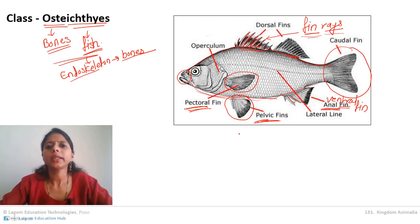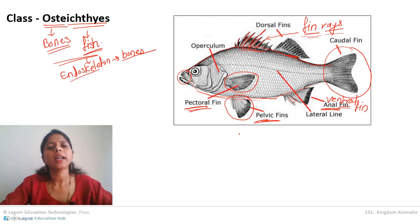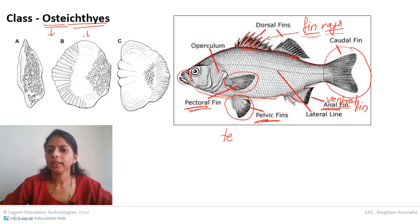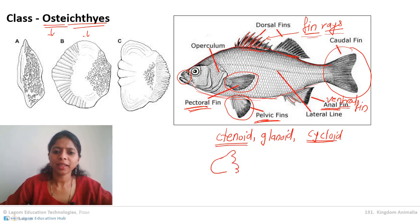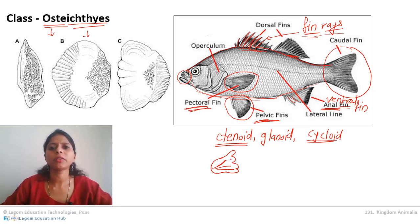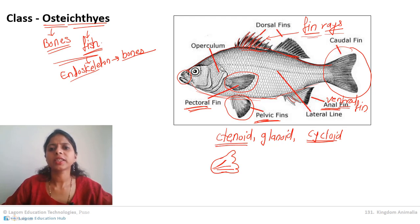The exoskeleton of bony fish is made up of scales — specifically ctenoid scales, ganoid scales, or cycloid scales. Cycloid scales are the most common, and ctenoid scales are also common in many bony fish. These scales are larger compared to the placoid scales found in Chondrichthyes and are more protective in function.